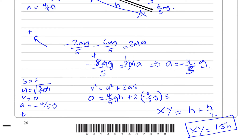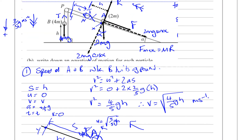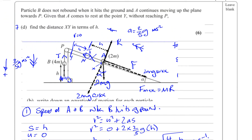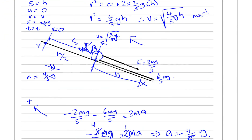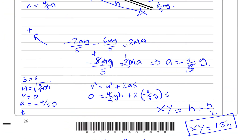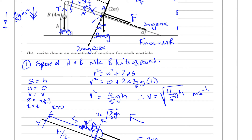So there we have our answer for part D. That was quite a lengthy question, and I think that was the last question of the paper — they sometimes save a busy one for the end. That's question seven completed.